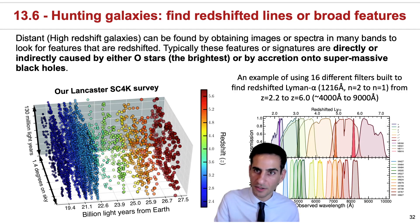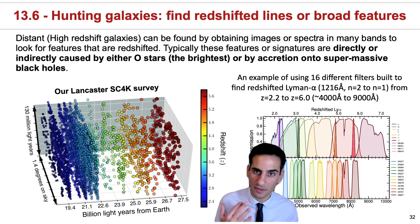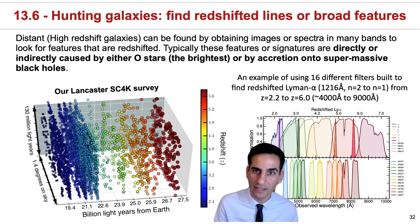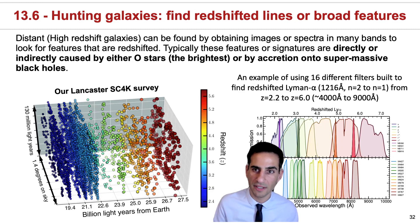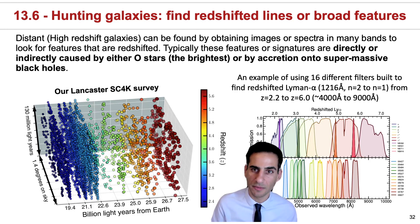Typically the features or signatures that we're looking for have been caused directly or indirectly by O-class stars. The reason for this is because O-class stars are the brightest or the most luminous, and they lead to the easiest signatures to find. On top of that, the presence of O-class stars implies that the galaxy is active, it's still forming stars, and also some of the signatures of O-class stars can also be mimicked by supermassive black holes.